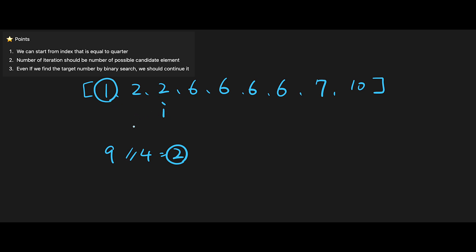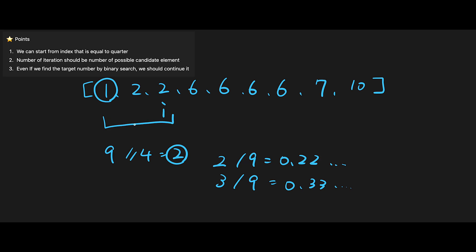We need at least three numbers: 2 divided by 9 equals 0.22, which is less than 25%, while 3 divided by 9 equals 0.33, which is more than 25%. So starting from index 2, if binary search finds the same number at index 0, it could be the answer. But if index 2 is 2 and index 0 is 1, it's definitely not.